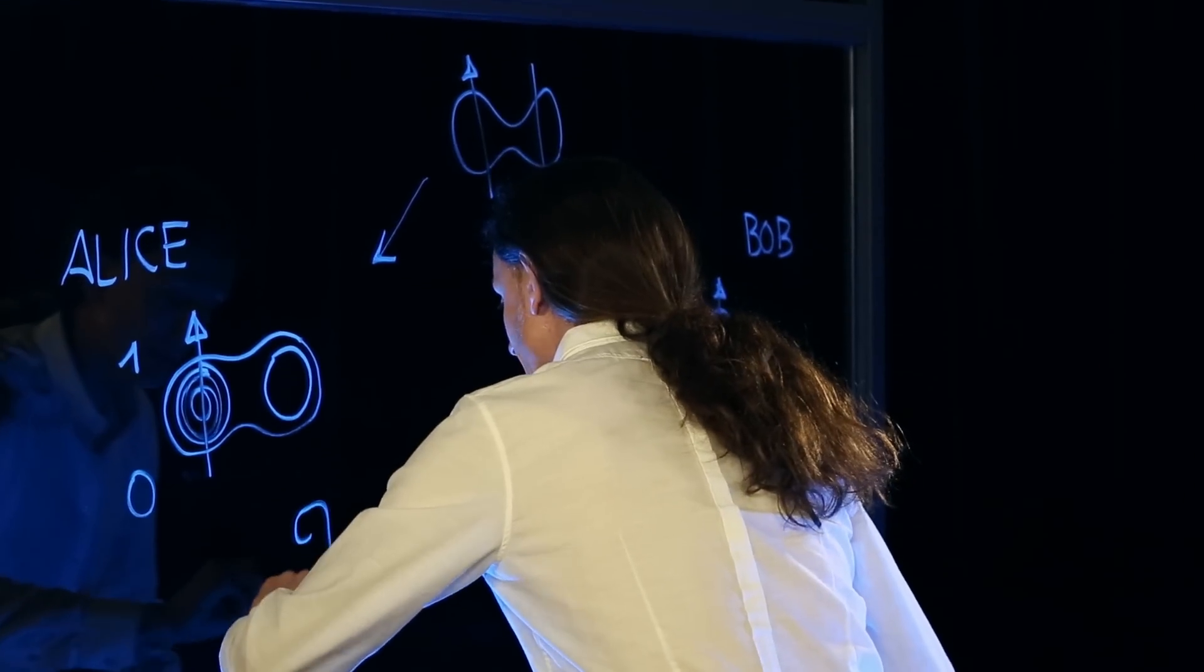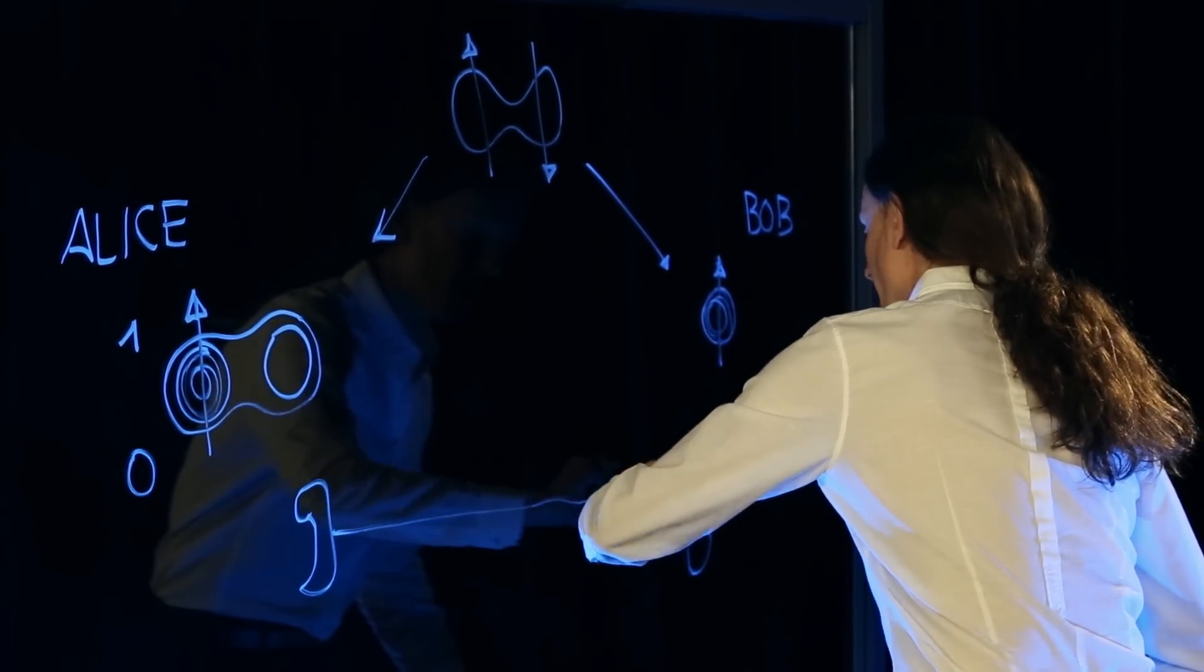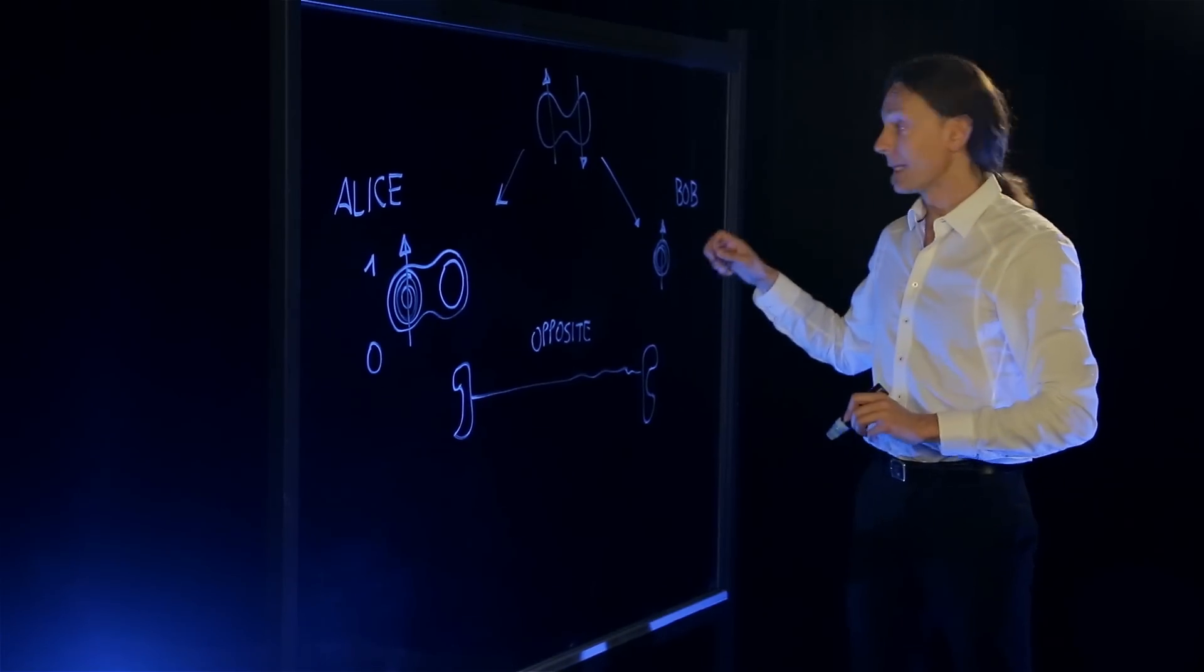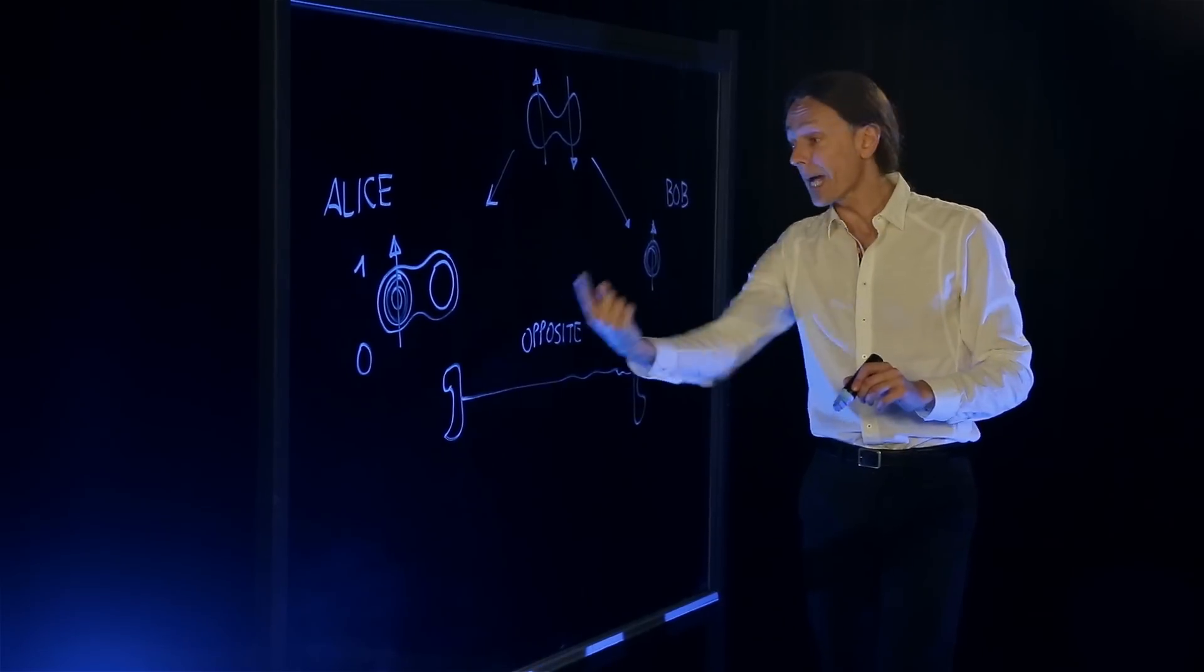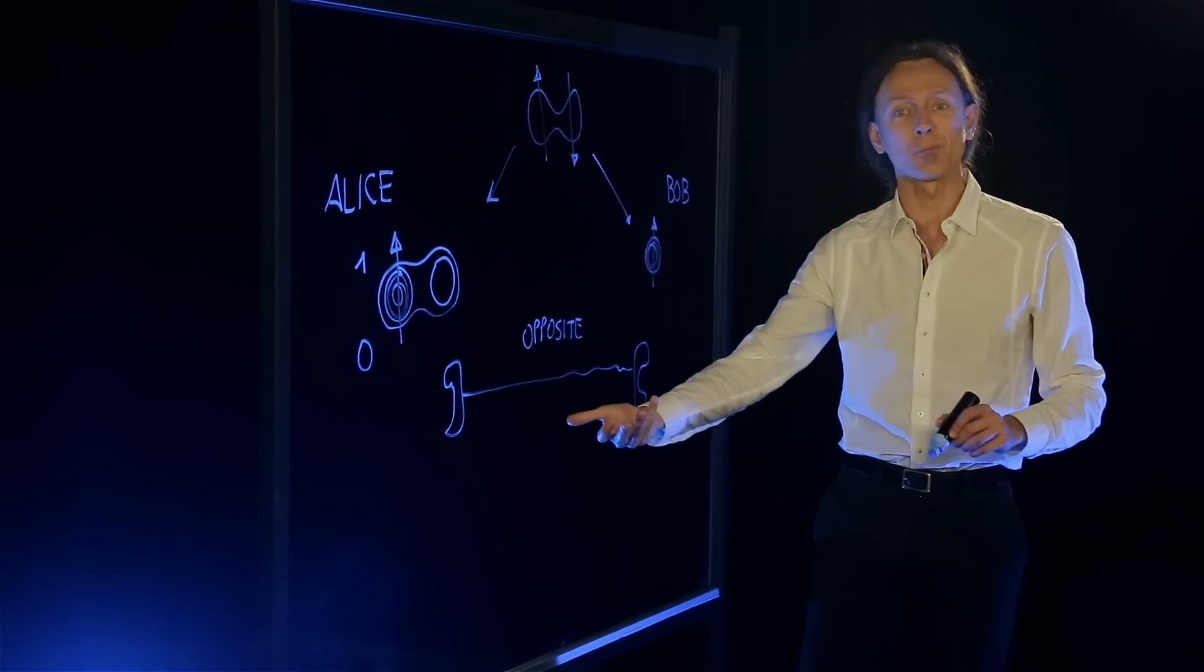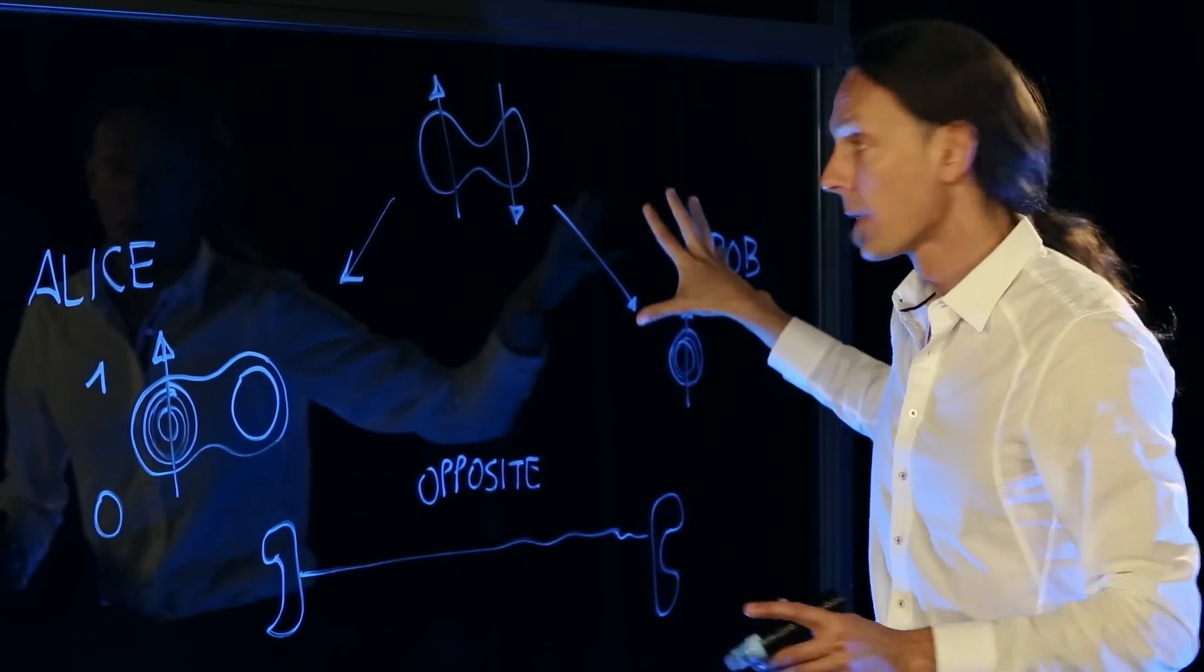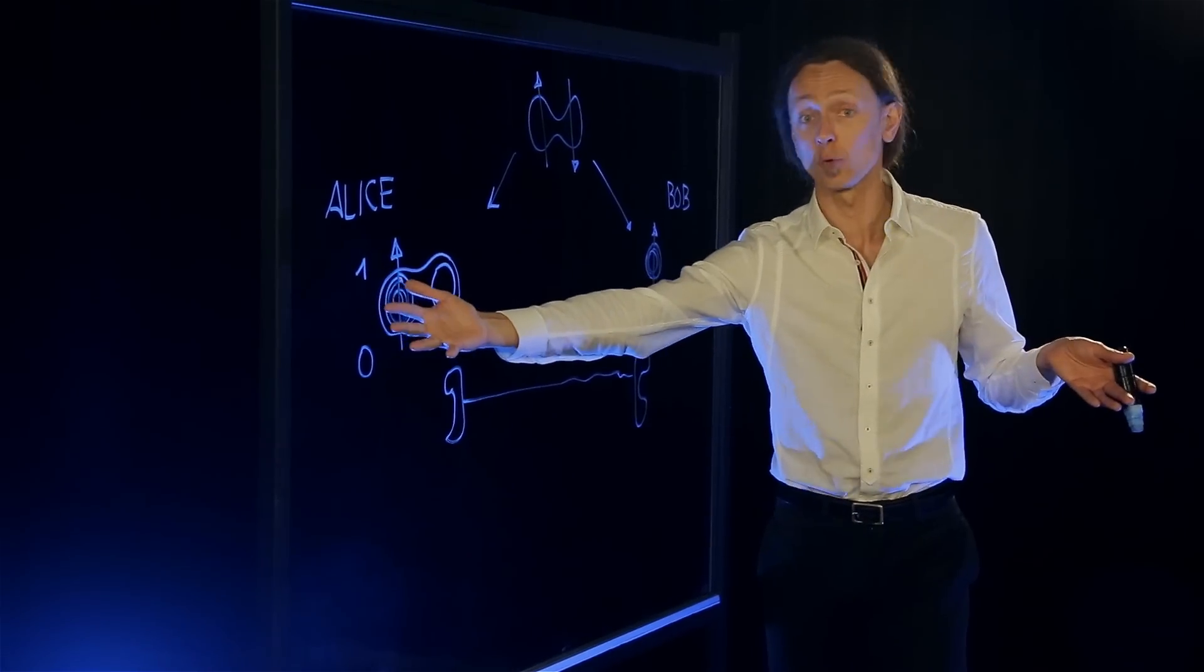So now Alice needs to use a normal classical communication channel to tell Bob the outcome of her measurement. So for example, she could take a telephone, make a phone call to Bob and say, hey Bob, I found that my electrons are opposite. So then when the phone call arrives, Bob knows that this electron contains the information that used to be in Alice's hands. But the time it takes for this to happen is the time it takes to make a phone call or to send an email or to send a text message. So you need a classical communication channel alongside the creation of this entangled pair of quantum particles. And that classical communication channel works at the normal speed of light or less.